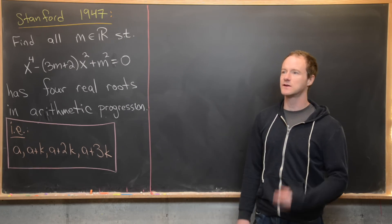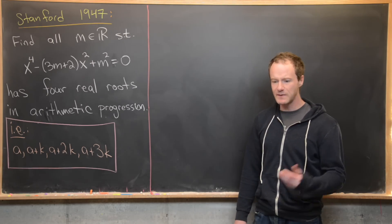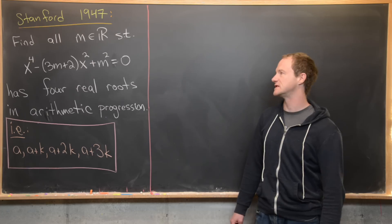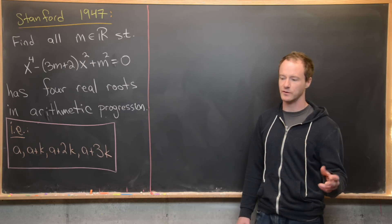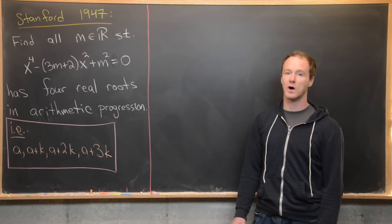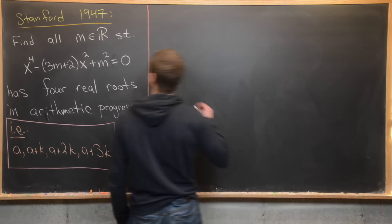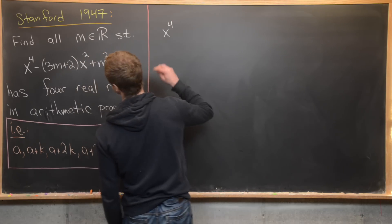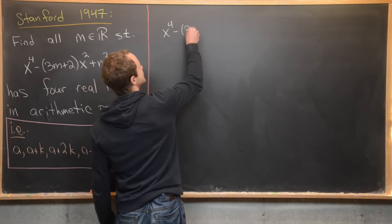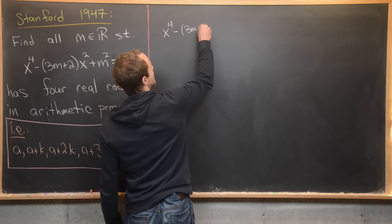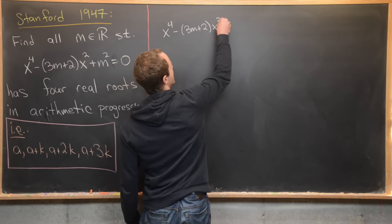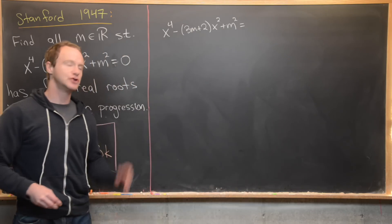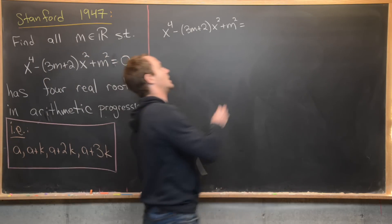But that's a bit too much work. Instead, we should use a clever factoring trick to write the quartic polynomial x⁴ − (3m + 2)x² + m² as a product of two quadratic polynomials.